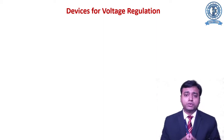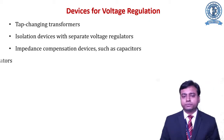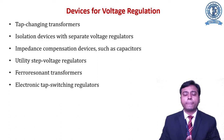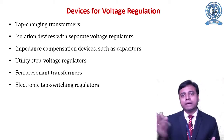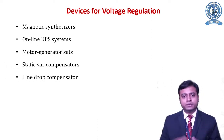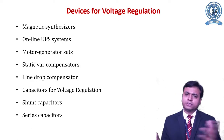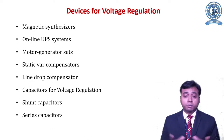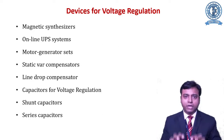There are many devices that can implement these solutions. These include: tap changing transformers, isolation devices, voltage regulators, impedance compensation devices such as capacitors, utility step voltage regulators, ferro-resonant transformers, electronic tap switching regulators, magnetic synthesizers, online UPS systems, motor generator sets, static VAR compensators, line drop compensators, shunt capacitors, and series capacitors. All these devices work on the same principle — they regulate the impedance of the system, and through impedance regulation they regulate the system voltage.